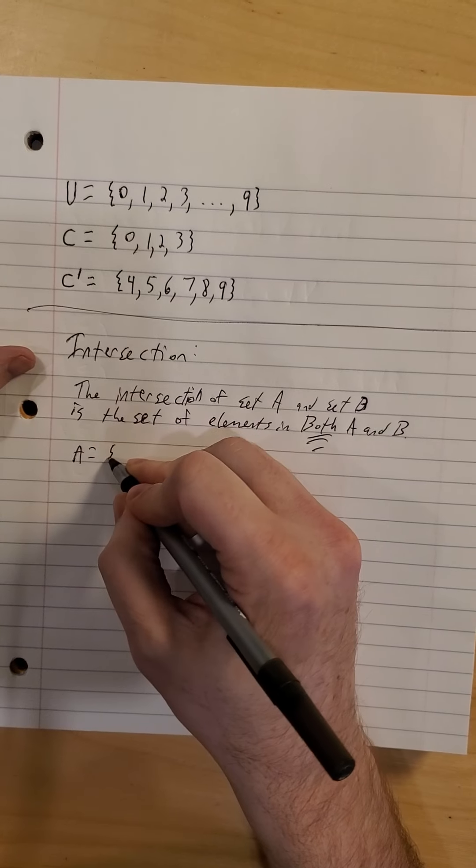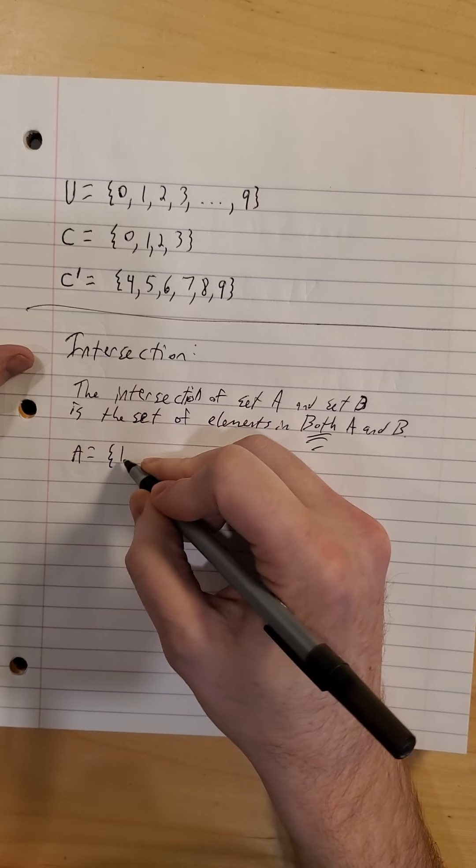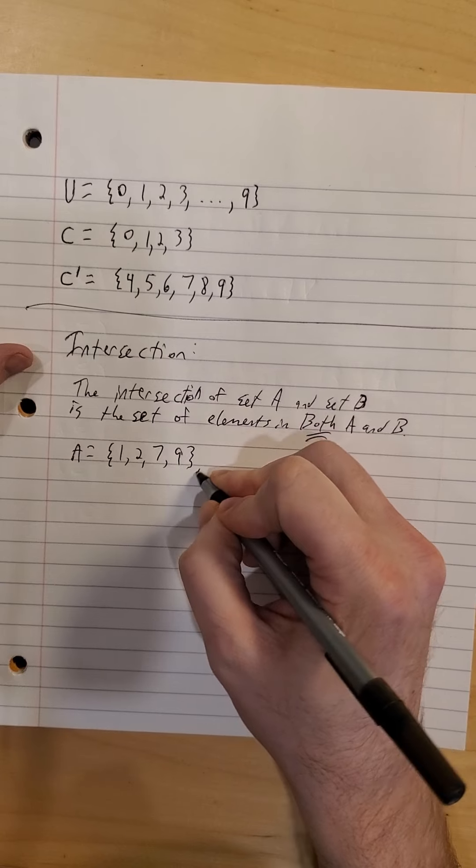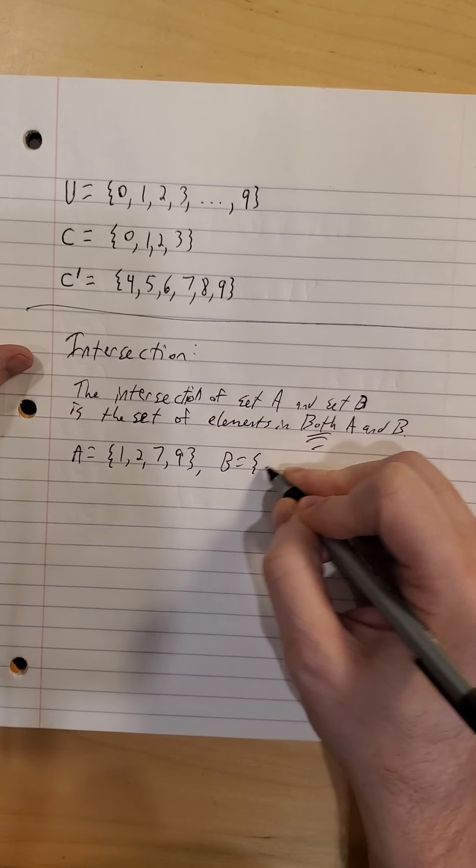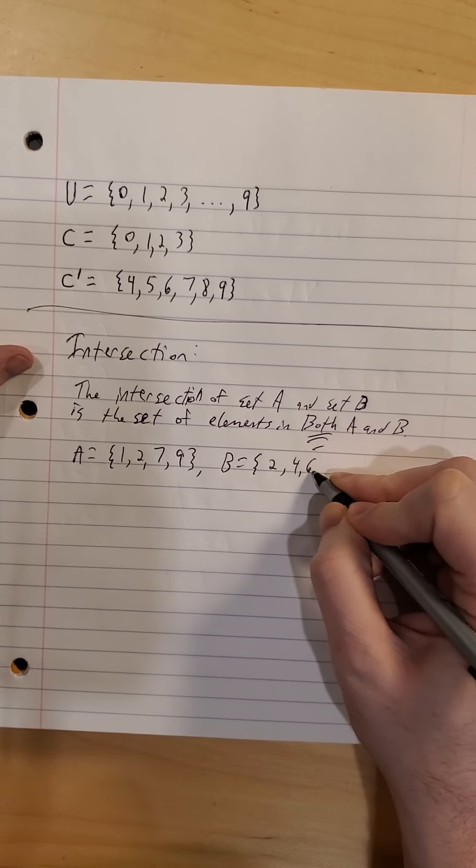So just a quick example, if A is 1, 2, 7, and 9, and B contains elements 2, 4, 6, and 8.